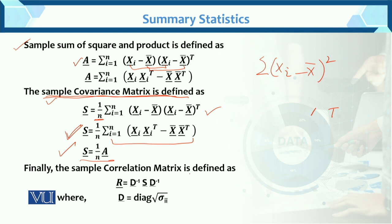Finally, the sample correlation matrix: the population correlation matrix is denoted rho, and the sample correlation matrix is denoted r. The sample correlation matrix r equals D-inverse times S times D-inverse, where S is the sample covariance matrix found above, and D equals the diagonal of sigma_i.